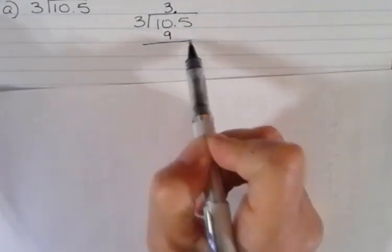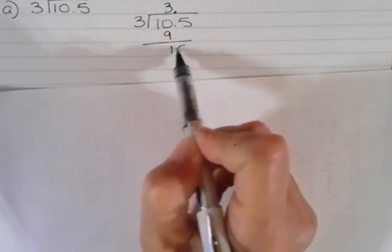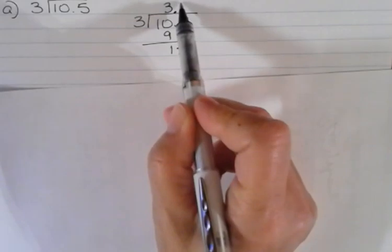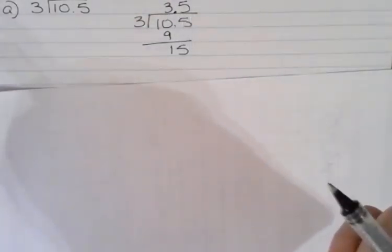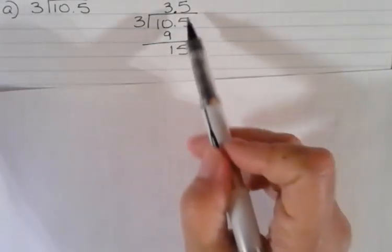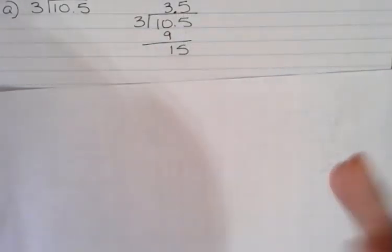3 times 3 is 9 and if I subtract I get 15. 3 goes into 15 5 times and I get 3.5. That's all there is to it. If I had been asked to round, I wouldn't need to round to the tenths because it stopped exactly at the tenths.